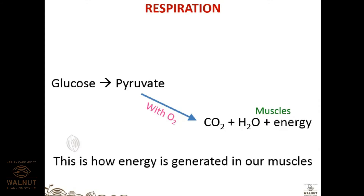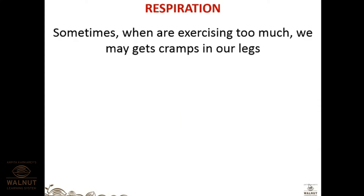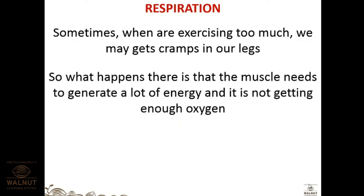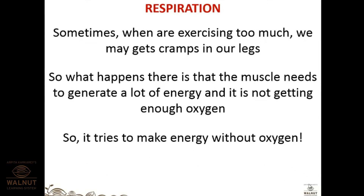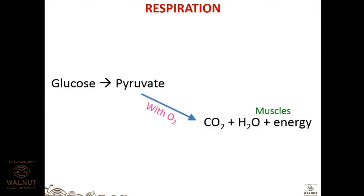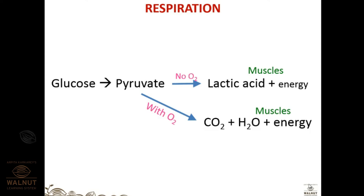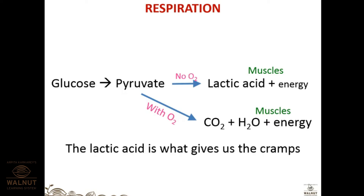This is how energy is generated in our muscles. Sometimes when we exercise too much we get cramps in our legs. The muscle needs a lot of energy and the body cannot supply enough oxygen. So the body tries to make energy without oxygen — glucose is broken down into pyruvate and then into lactic acid plus energy. The lactic acid produced is what gives us cramps.